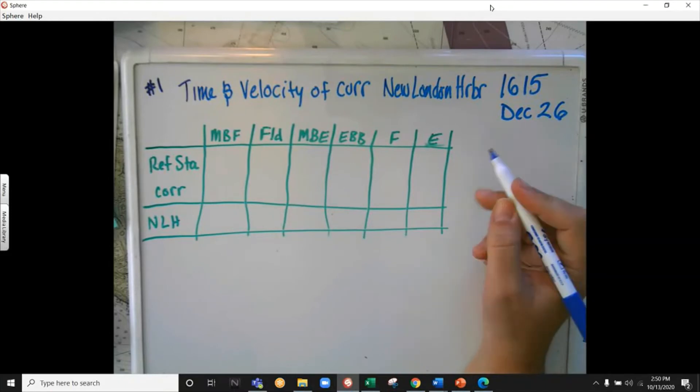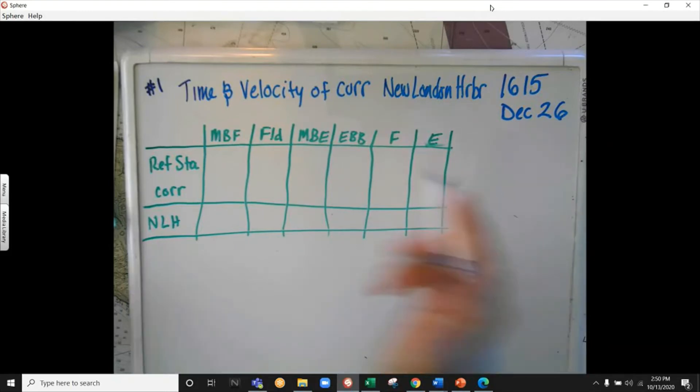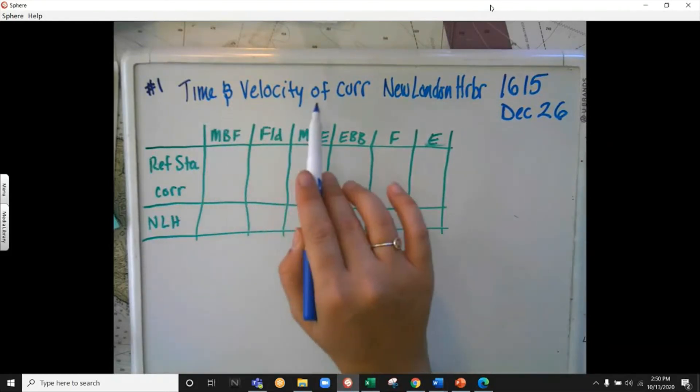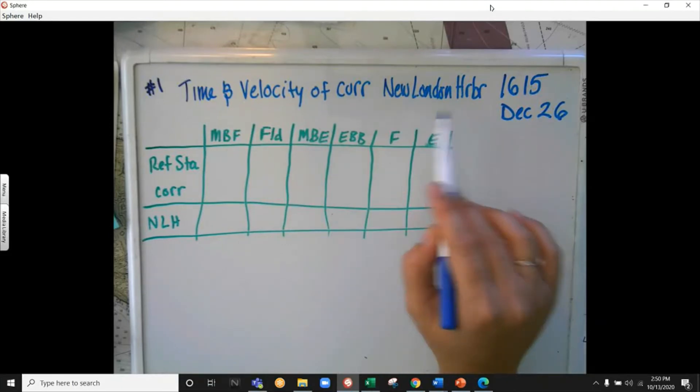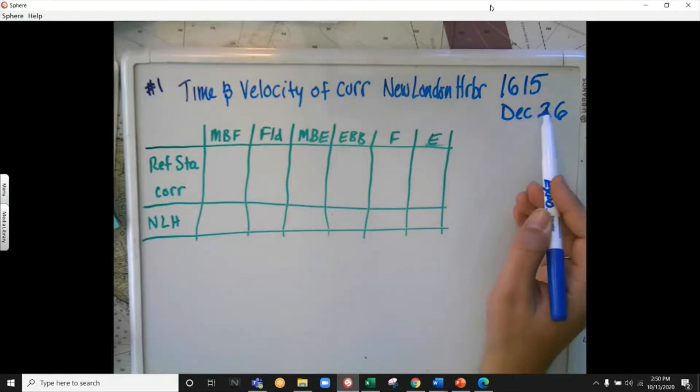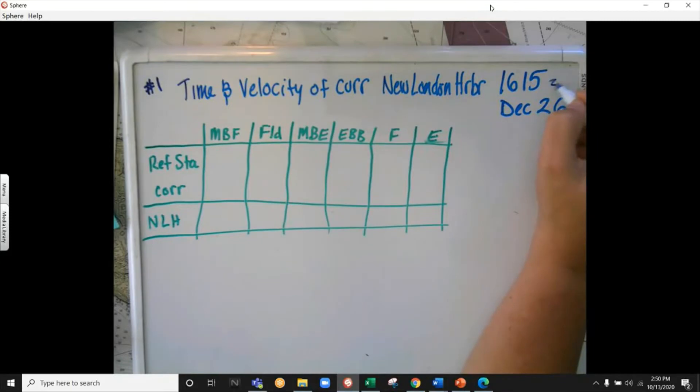Okay, so I'm going to do number one on the labware assignment for tides and current. Number one is a current problem, so I want to show you how to use the current book, which is very similar but just has a few little differences. They told us in the problem what was the time and velocity of the current at New London Harbor at 1615, and that was zone description 5 on December 26.